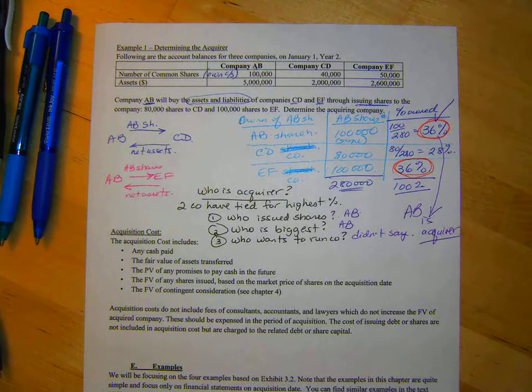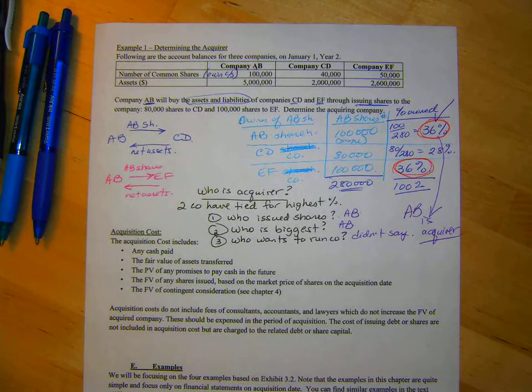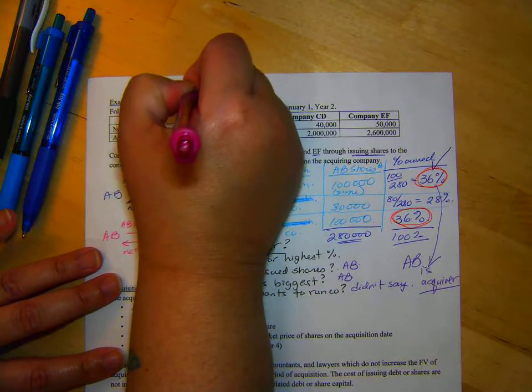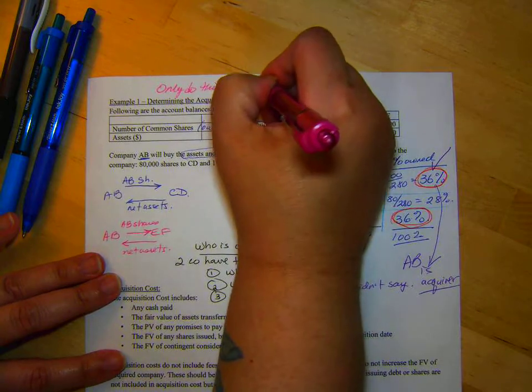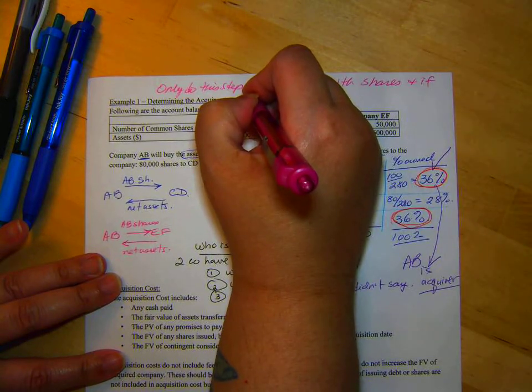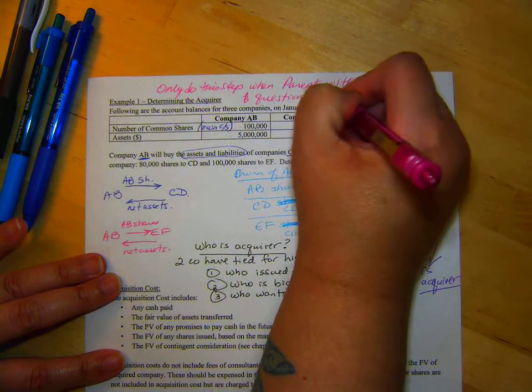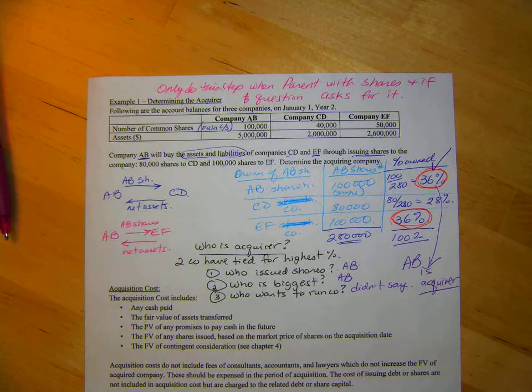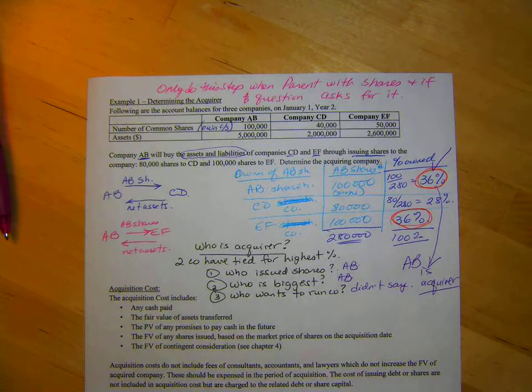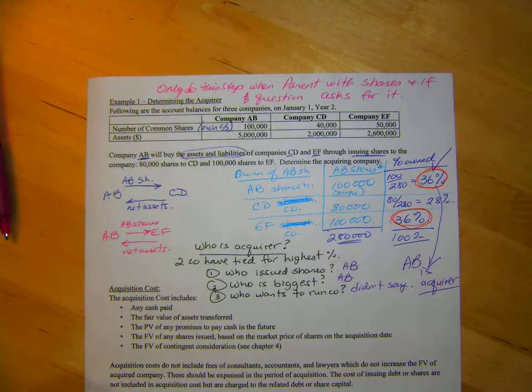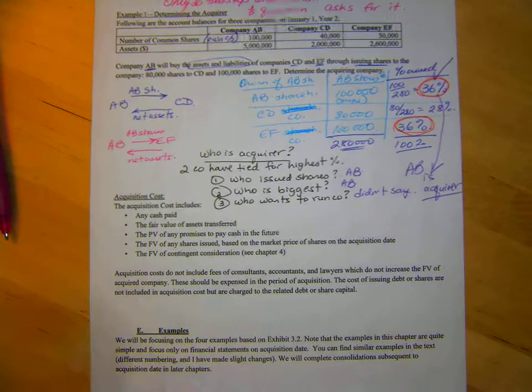So, that's determining who the acquirer is. Generally, only do this step when the parent paid with shares. And, if the question asks for it. So, every question you do, don't try and do this step. Usually, it'll just ask you for it, determine the acquirer. But, this is how you do it. In real life, of course, you'd have to do this on every step. Although, by the time you got here to these steps, you'd know what you were doing. If you were the acquirer.